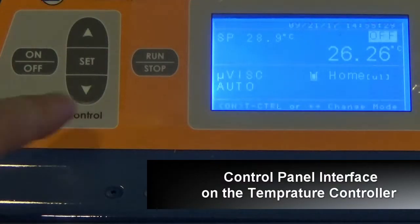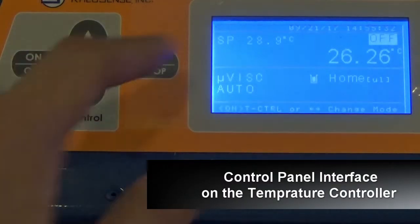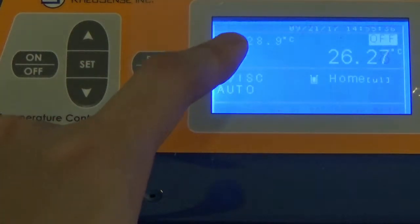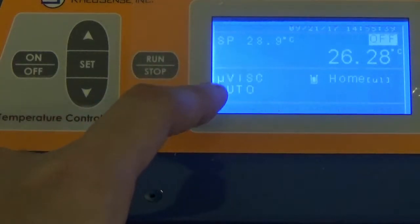As you can see here, there's a temperature control panel. At the display panel, you can see this additional temperature setting. The modes here remain the same as the microVISC, which are the auto, advanced, and cleaning modes.